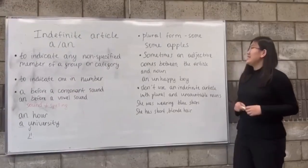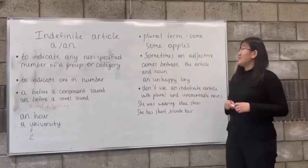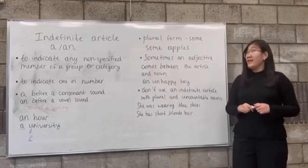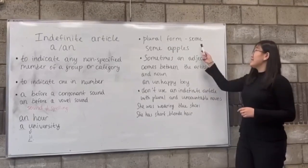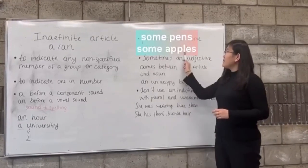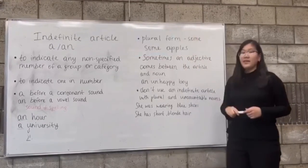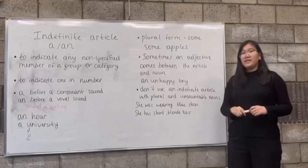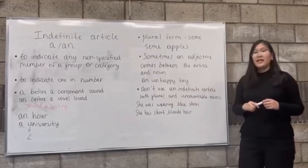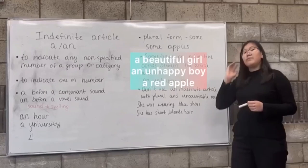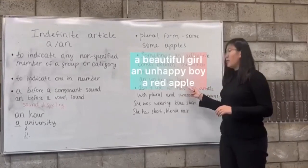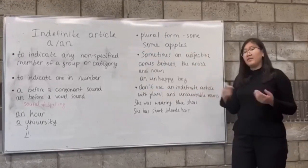Let's continue. The plural form uses 'some.' For example: 'some pens,' 'some apples.' And sometimes an adjective comes between the article and the noun. For example: 'a beautiful girl,' 'an unhappy boy,' 'a red apple.'